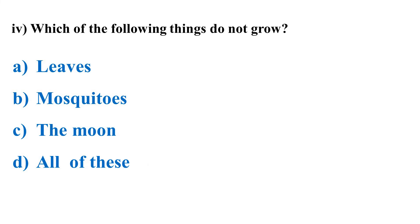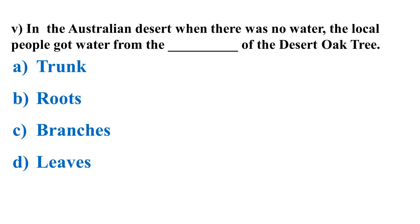Which of the following things do not grow? Options: leaves, mosquitoes, the moon, all of these. The correct answer is the moon.